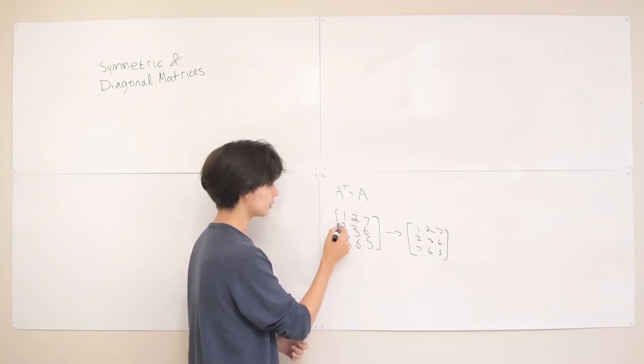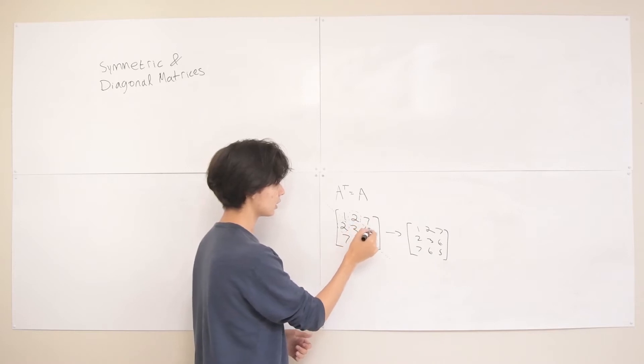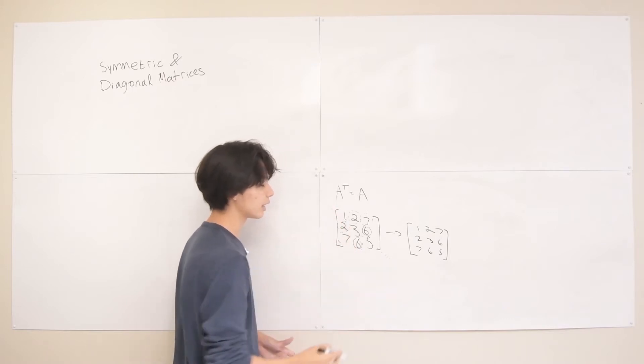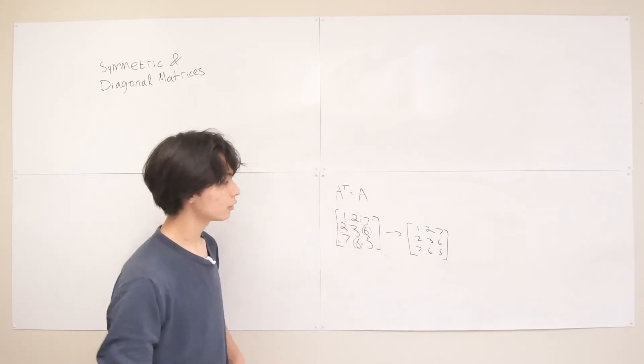So this one is the same as this, and this is the same as this, and then this is the same as this. So you can see that they're mirrored across the diagonal, and the ones across the diagonal don't need to be in any specific pattern.